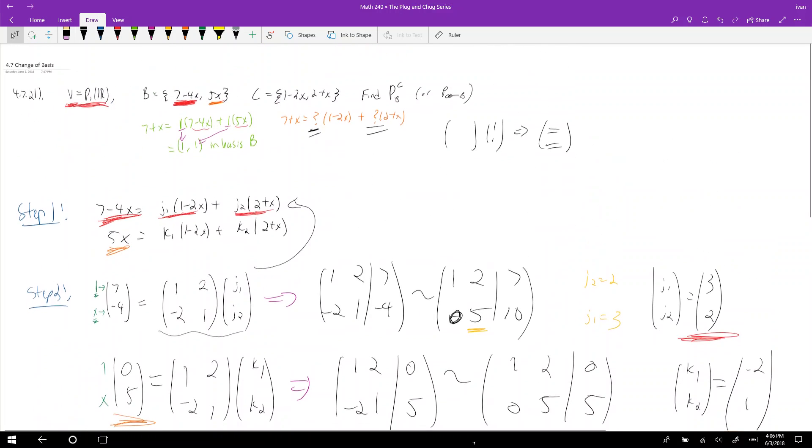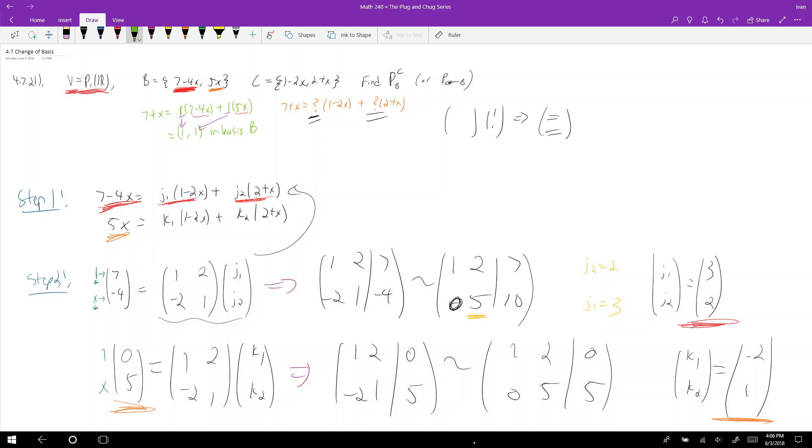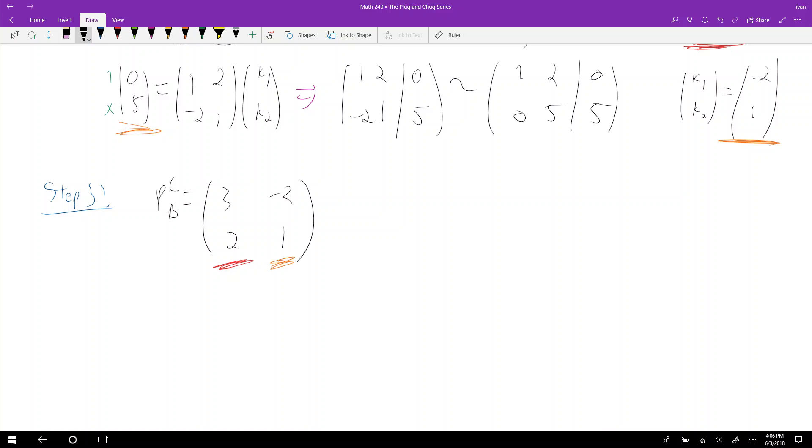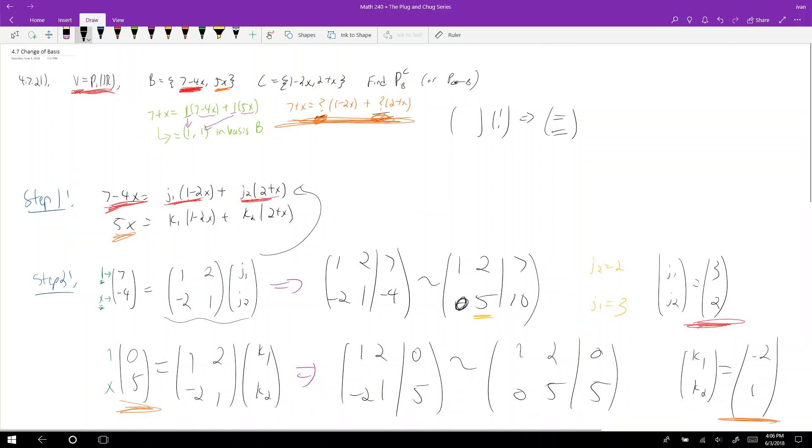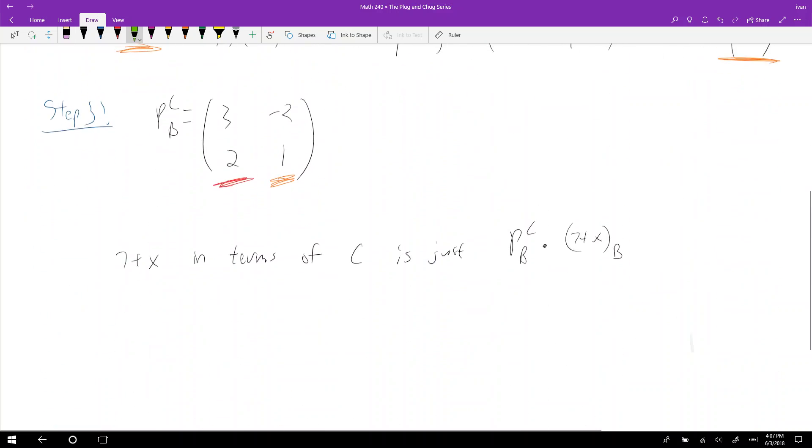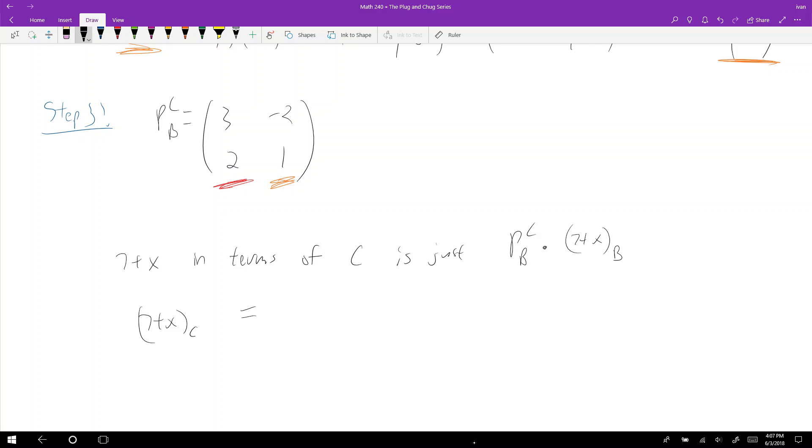And what does that mean? Well, that means up here in this example, 7 plus x was equal to (1,1). Well, what is 7 plus x in terms of this basis c? And I'm going to claim that 7 plus x in terms of c is just p b c times 7 plus x written in terms of b. And here is 7 plus x written in terms of b. It's (1,1). So then 7 plus x in terms of c is equal to, so we write this 7 plus x in terms of c, like that. It's equal to 3, negative 2, 2, 1, times (1,1). And that gets me (1,3).